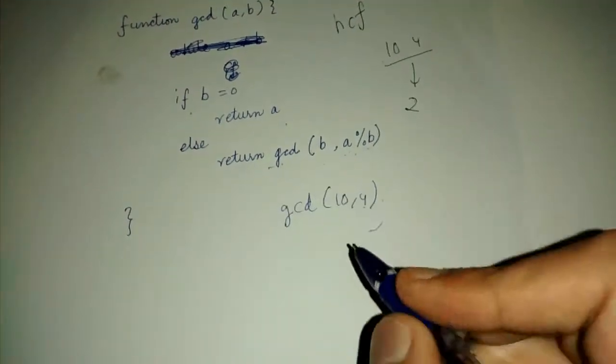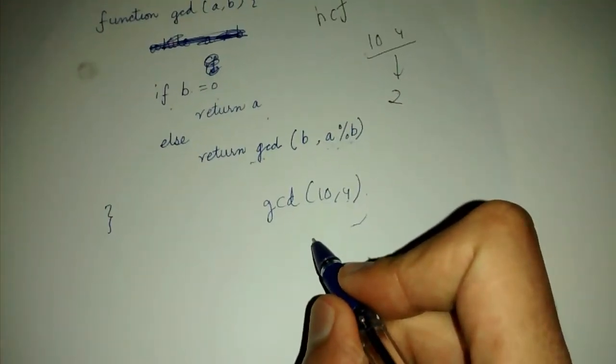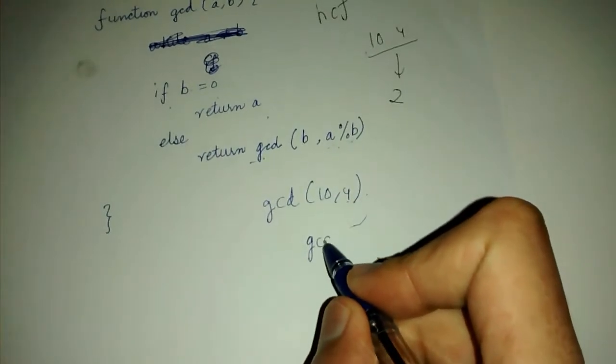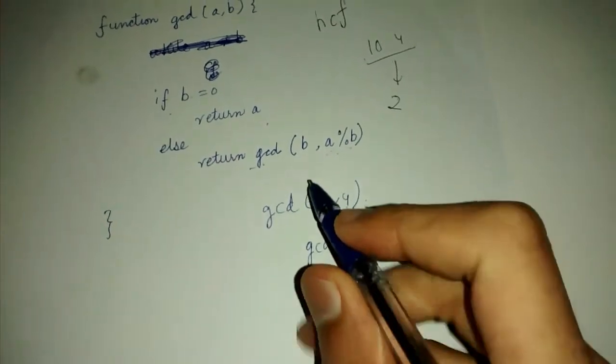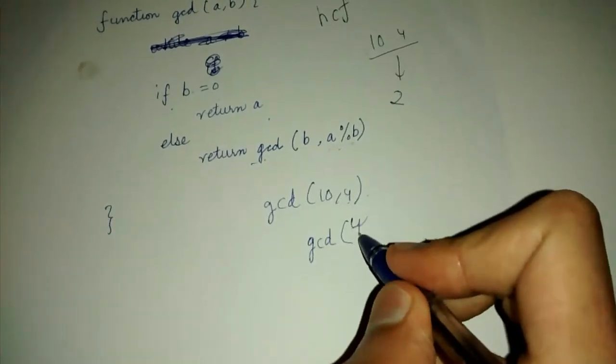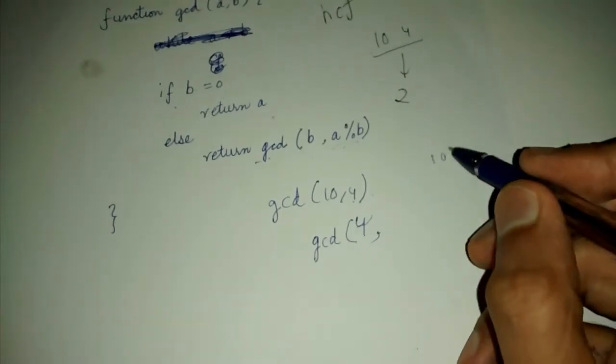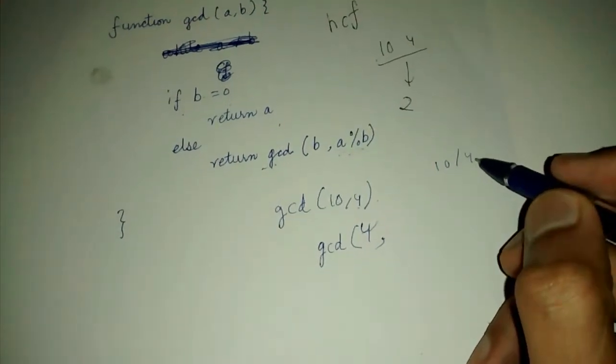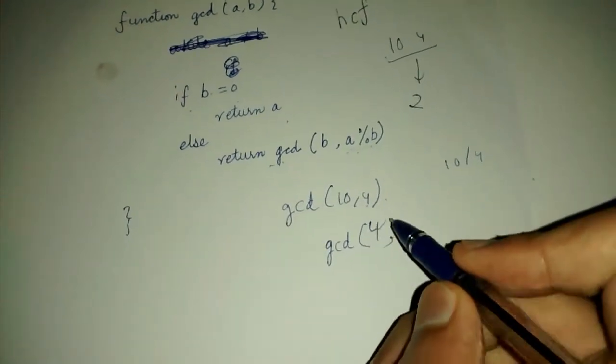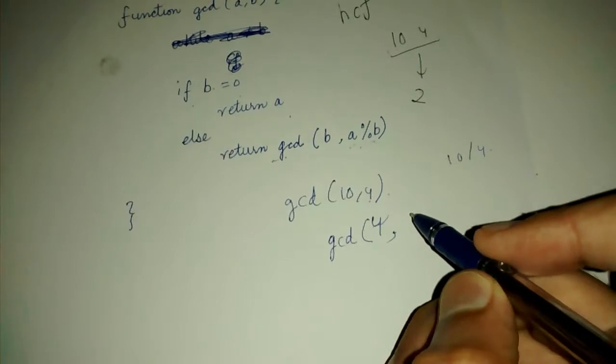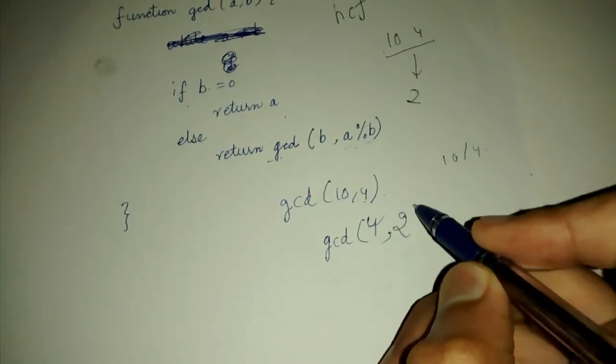So it will go in the else condition. It will return GCD of B that is 4 comma 10 percentage 4. So when 10 is divided by 4, we get remainder as 2 because 4 times 2 is 8 and the remainder is 2.